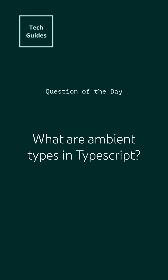You can find ambient types as packages that start with @types/, like @types/lodash or @types/node. You can get these through npm install and then you'll have the ambient declarations needed in TypeScript for these traditionally JavaScript libraries.